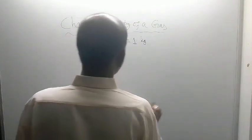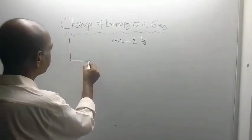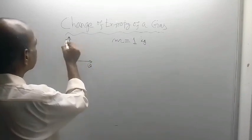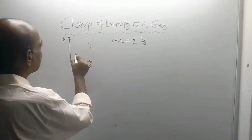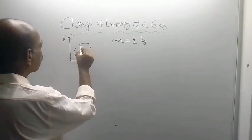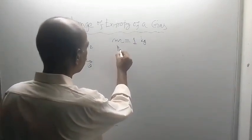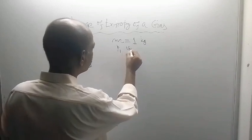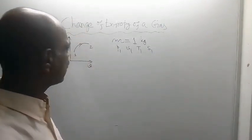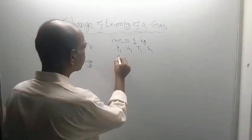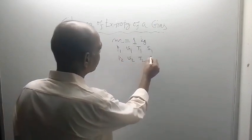This is the PV diagram — this axis is V and this is P. State 1 and state 2 are marked, and this is the process path between them. At state 1, the pressure was P1, volume was V1, absolute temperature was T1, and entropy was S1. At state 2, the pressure was P2, volume was V2, temperature was T2, and entropy was S2.